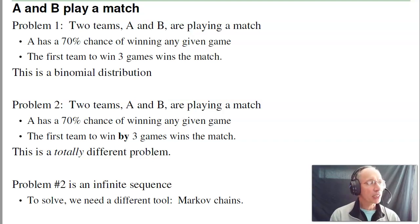Consider a second problem. Again, two teams playing a game. A's got a 70% chance of winning. To win the match, however, A has to win by three games. This is a totally different problem. If A wins, then B wins, you're back where you started. To solve that, we need a different tool. That's a Markov chain.